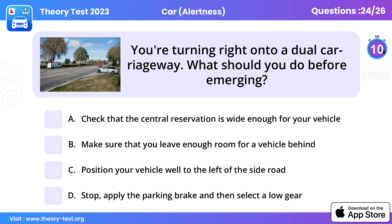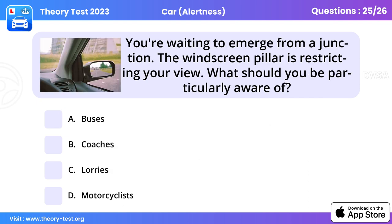Question 24. You're turning right onto a dual carriageway. What should you do before emerging? Check that the central reservation is wide enough for your vehicle.